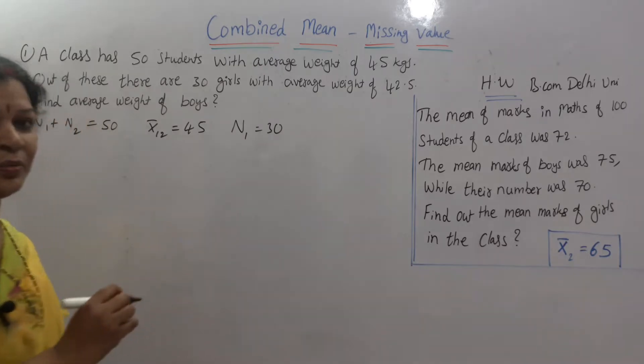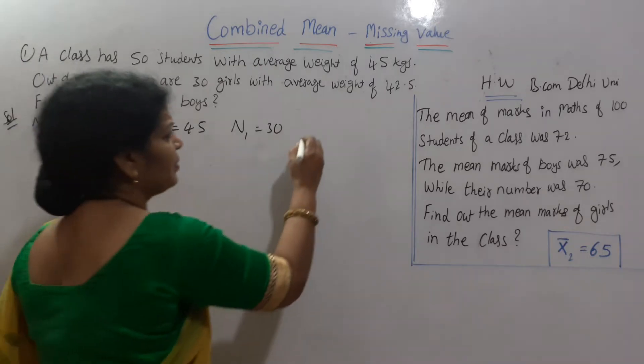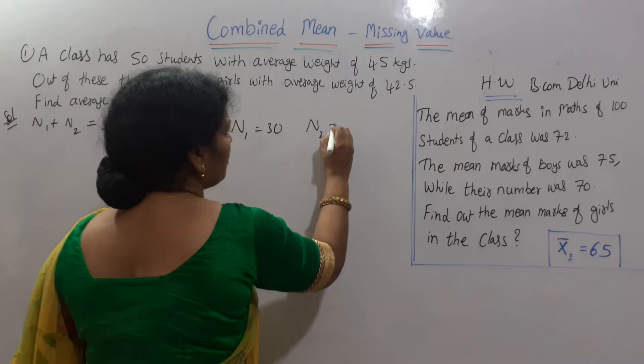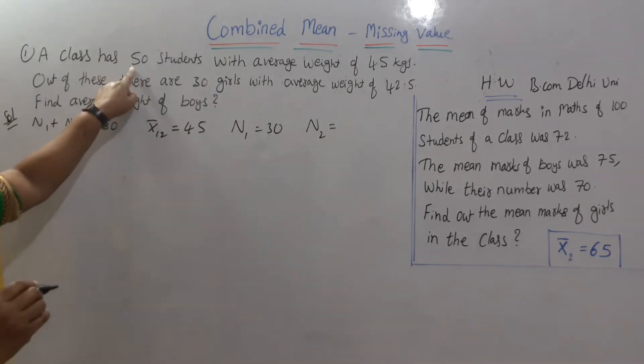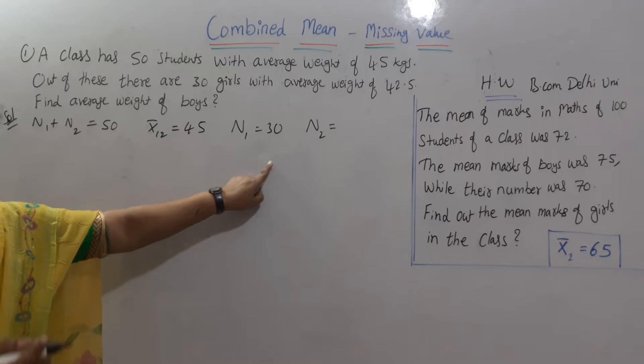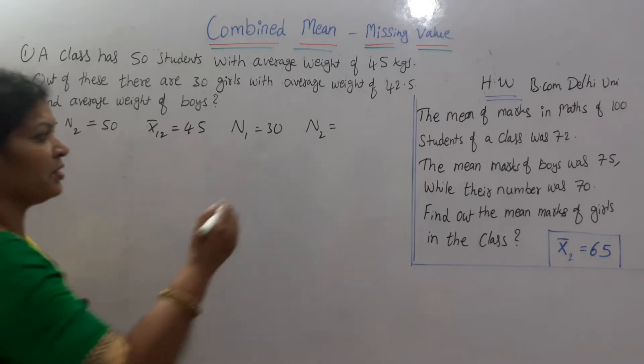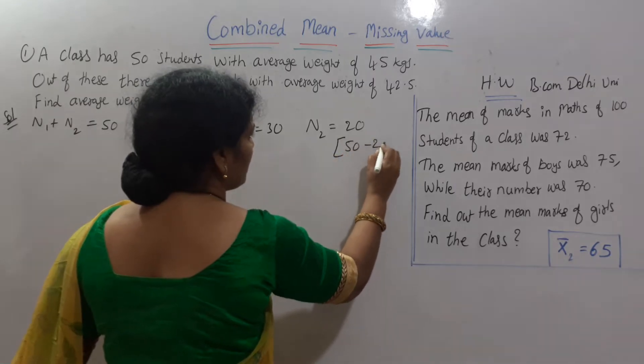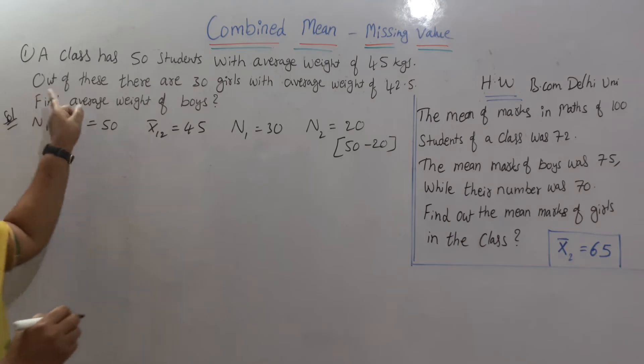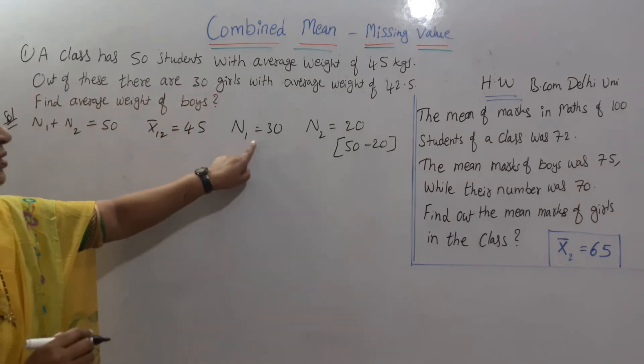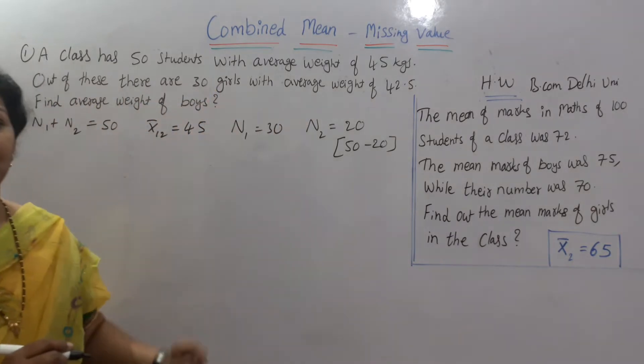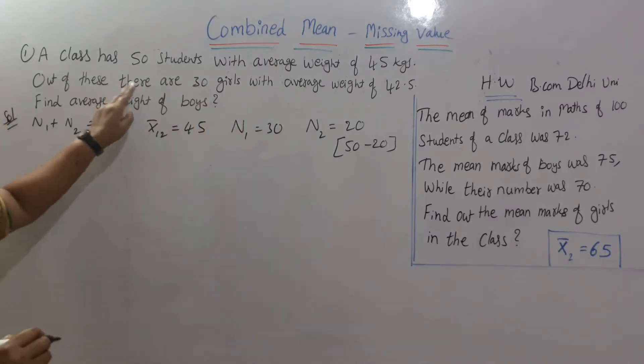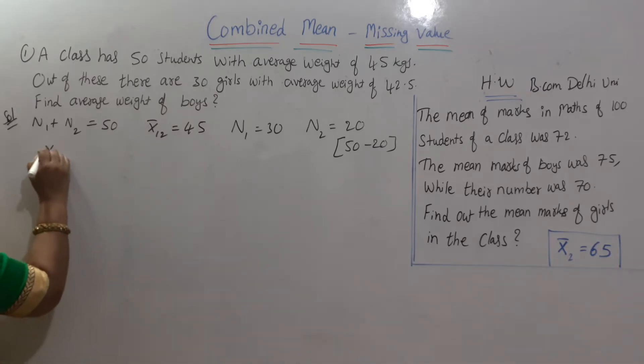N1 is 30. And what about N2? N2, how do you get? Total is 50. Out of 50, 30 are girls. Now boys are 20. If you want, you can write it here. 50 minus 20. N2. Out of these 30 girls, means N1 is 30. The average weight of the girls, 30 girls average weight is 42.5. It means X bar 1 is given to us 42.5.